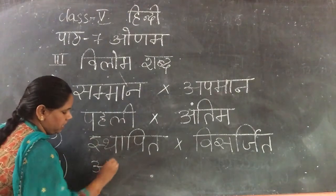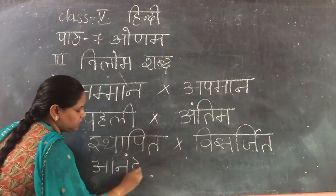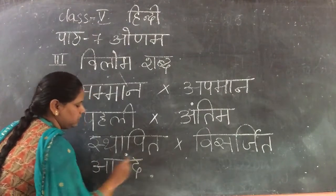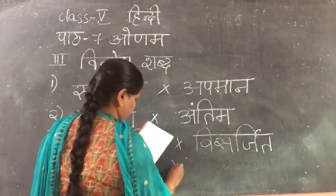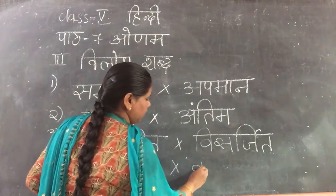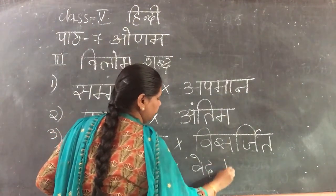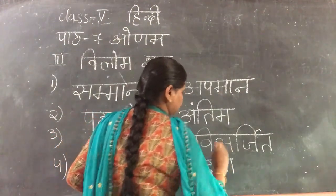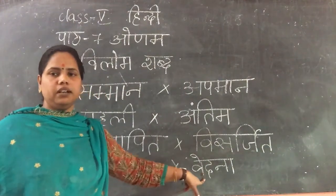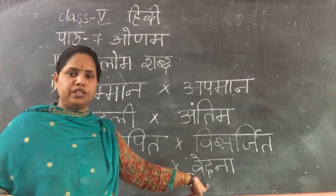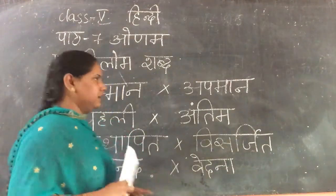Next: Anand means Happiness. The opposite of Anand — happiness — is sadness: Vedhana. Dukhi we can also say, but Vedhana is a new word. I want you to learn the new words. Anand — Vedna.